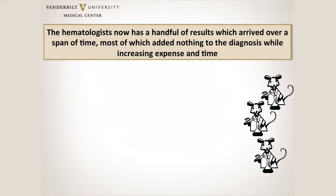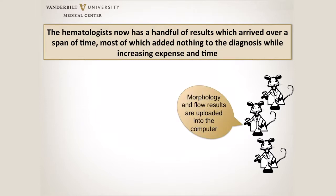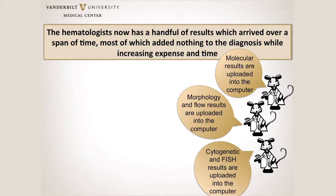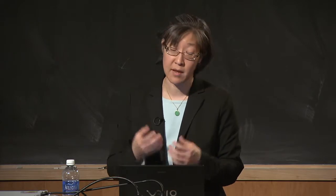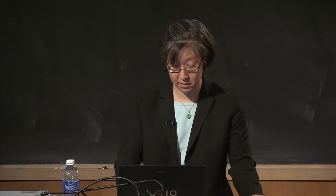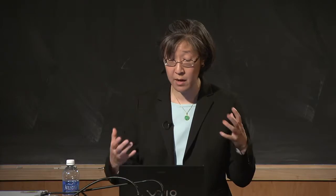The hematologist ends up with a whole bunch of different test results arriving over a span of time. For instance, our morphology and flow results may come out within 24 hours, but molecular results may take a few days; cytogenetics and FISH can be anywhere from 48 to 72 hours, and some molecular results need to be batched and may take weeks. The vast majority of those results do not actually add to their understanding — they're negative results that are simply exclusionary, arriving over a span of time.